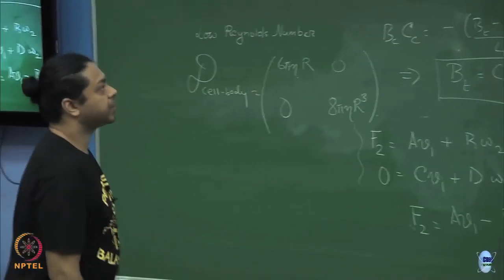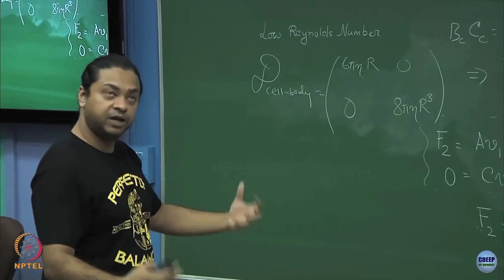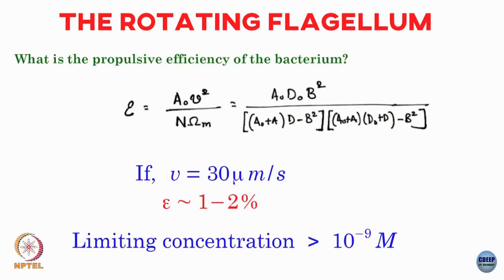This experiment has been done. Putting in the swimming speed and the numbers a, b, d for a helical propeller, you get a propulsive efficiency of 1 to 2 percent — extremely low. Although evolution has produced this beautiful motor, it has not optimized it for efficiency. But Purcell argued that the bacteria does not care, because ordinarily it swims in a nutrient-rich environment. Even with low efficiency, it gets the nutrients it needs to survive, until concentrations drop to nanomolar levels.